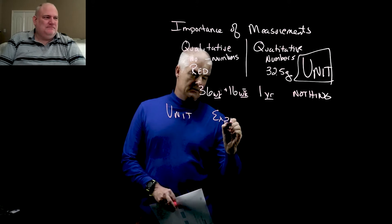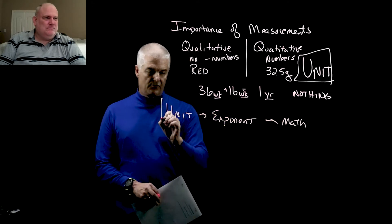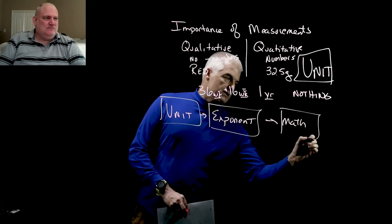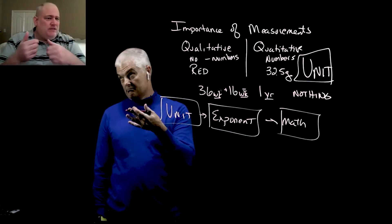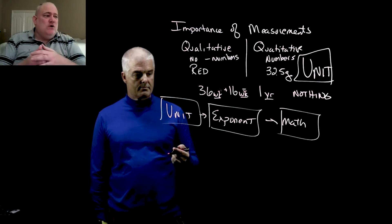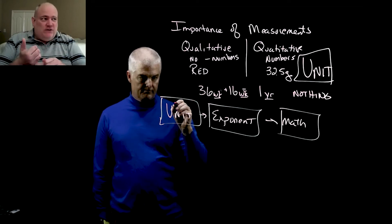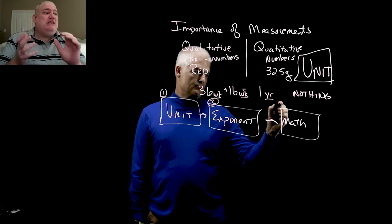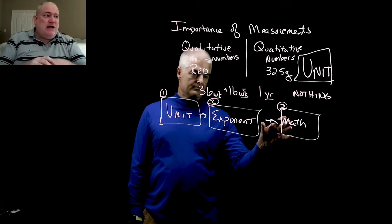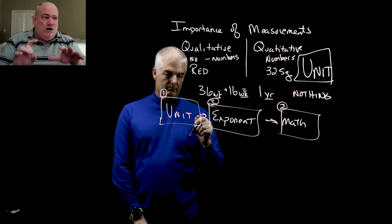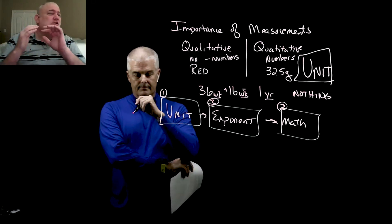Here's a workflow sketch: you've got units, exponents, and math — in that order. It's like order of operations in math. Whenever you're dealing with a problem that has a unit, take care of units first, then exponents, and only then do the math. For significant figures we'll talk about that later. Just keep this flowchart handy because we're going to use it all the time.